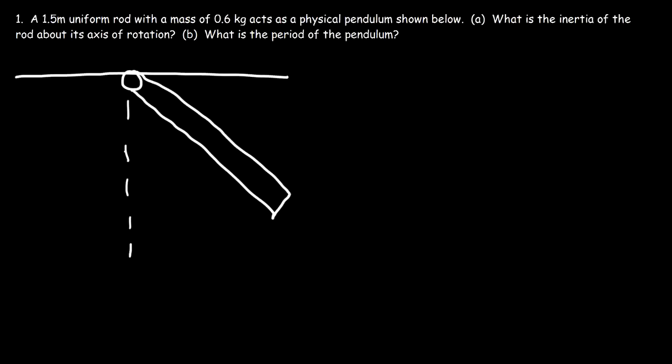In this video we're going to talk about how to solve problems associated with the physical pendulum. In this example we have a 1.5 meter uniform rod with a mass of 0.6 kilograms acting as a physical pendulum, as you can see in the figure.